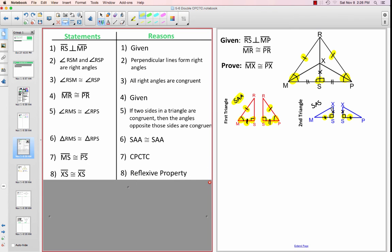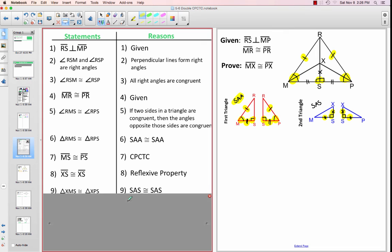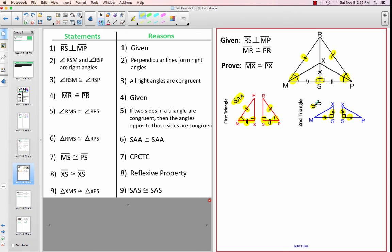And then we have the reflexive property, so XS is congruent to XS, reflexive property of equality. And now we have enough information so we can prove those triangles congruent by side angle side.